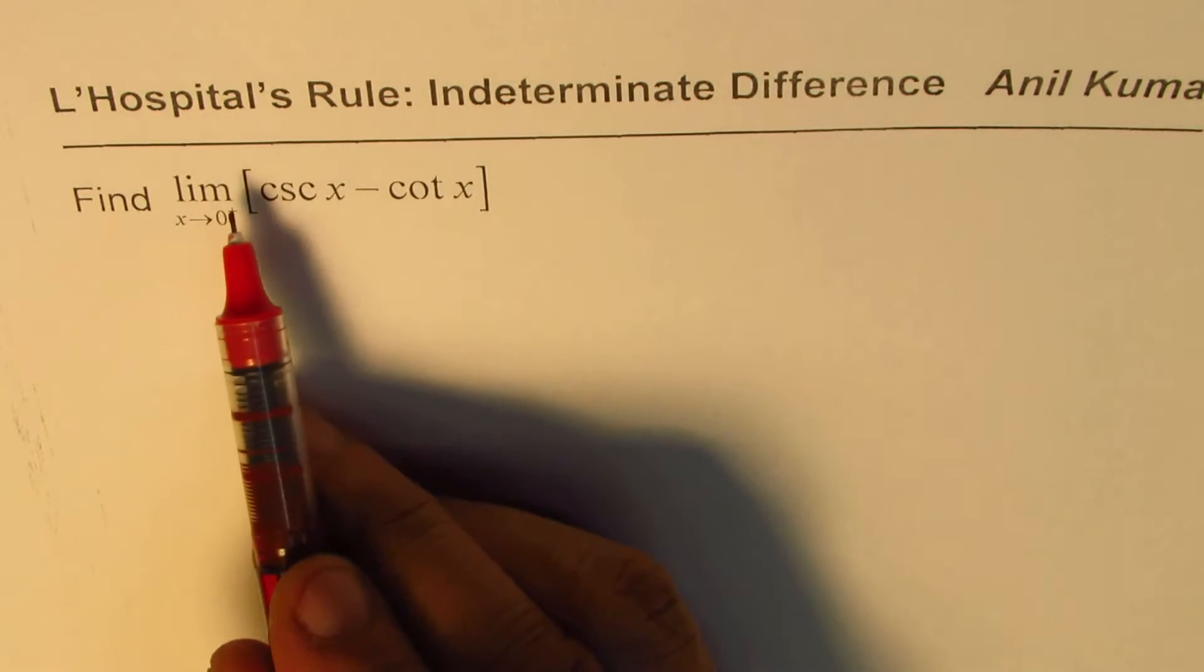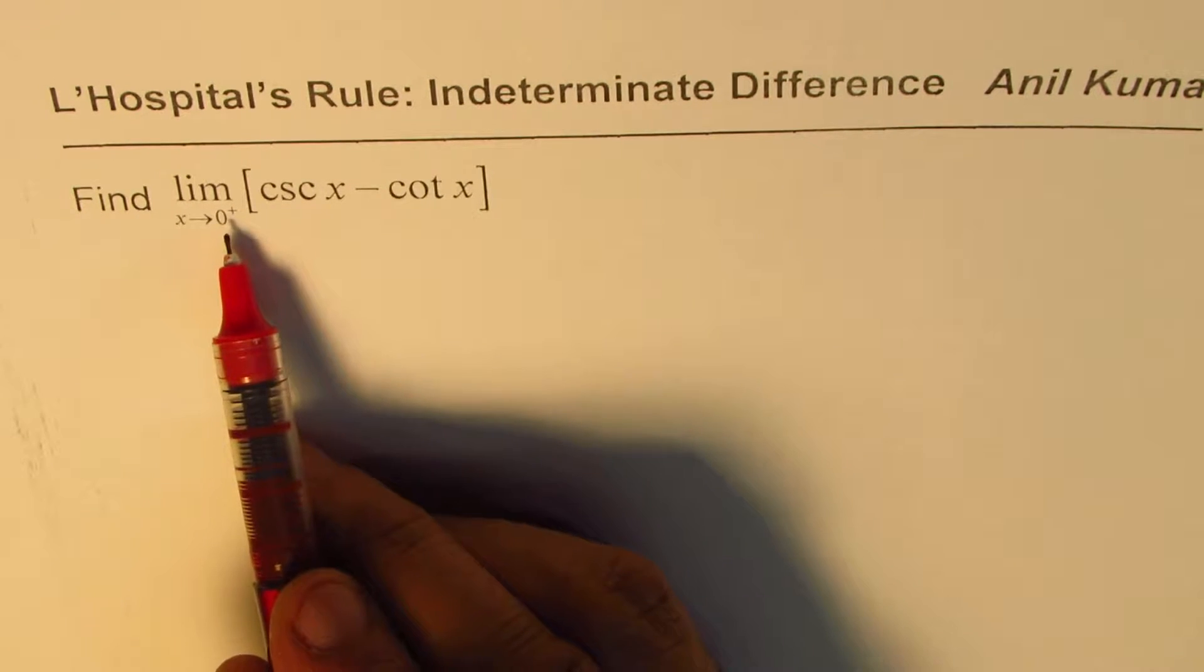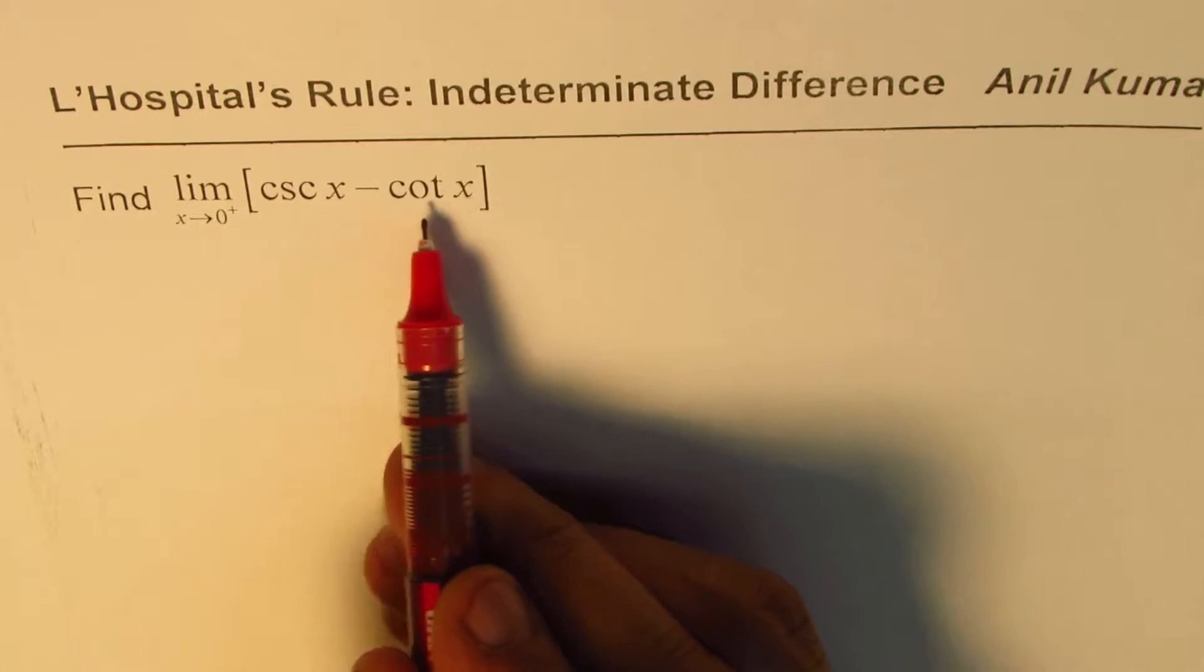The example is: find limit as x approaches 0 plus for cosecant x minus cotangent x.